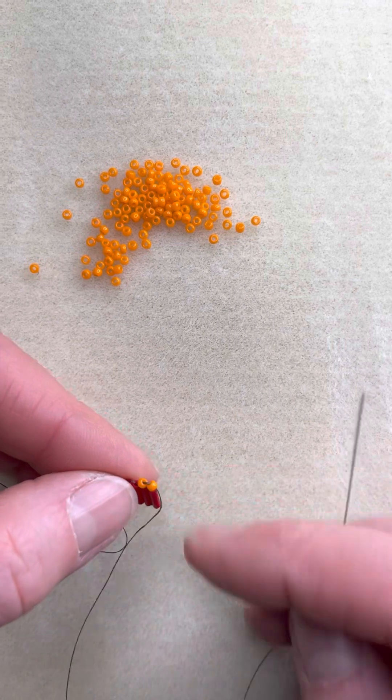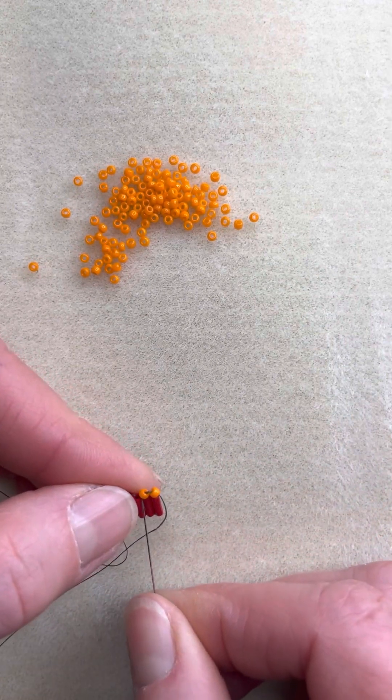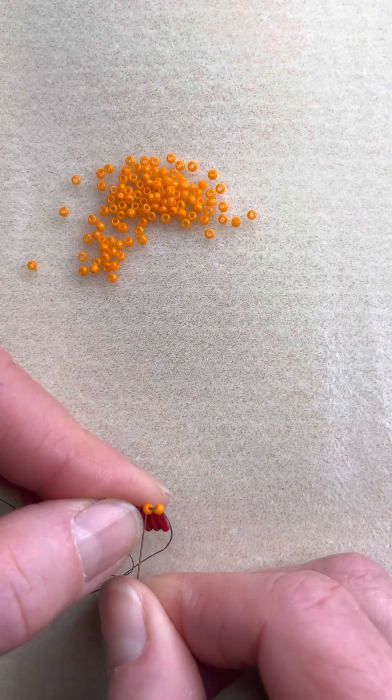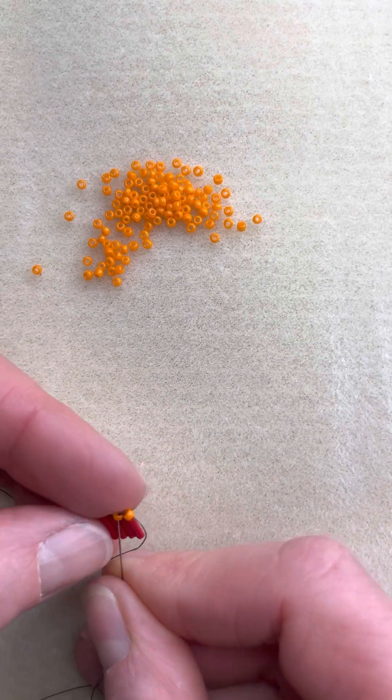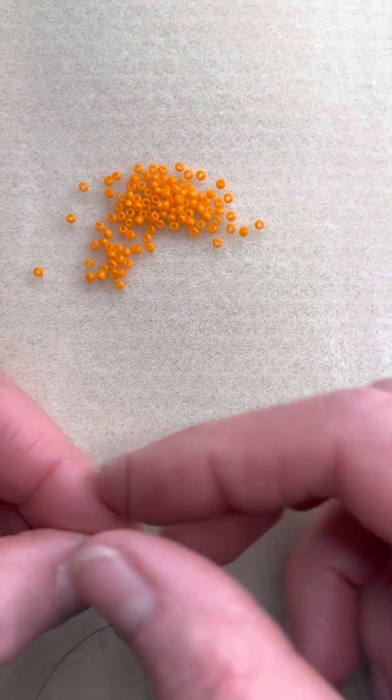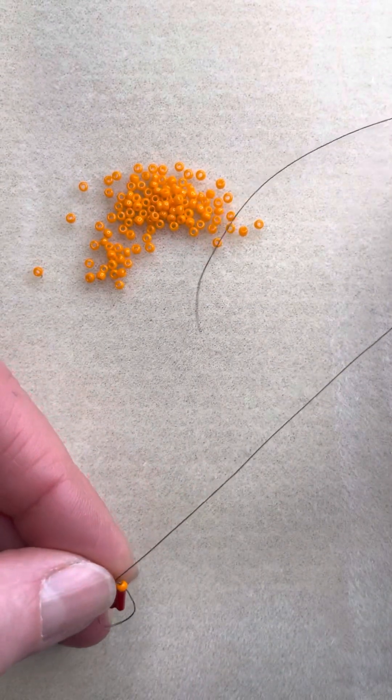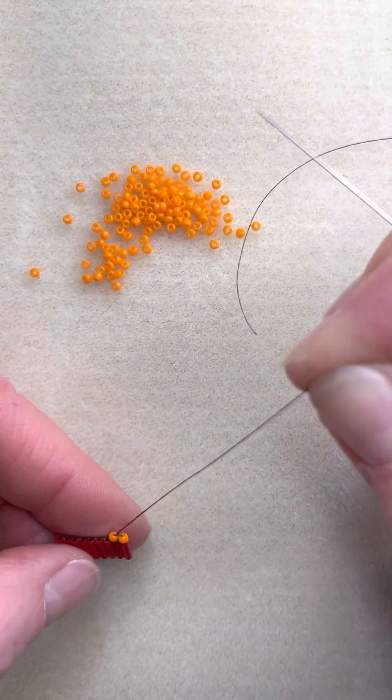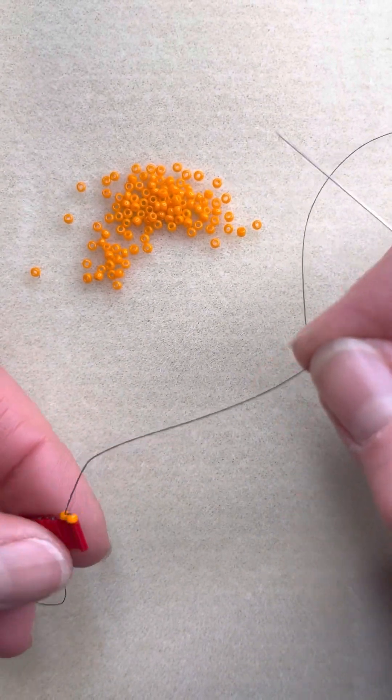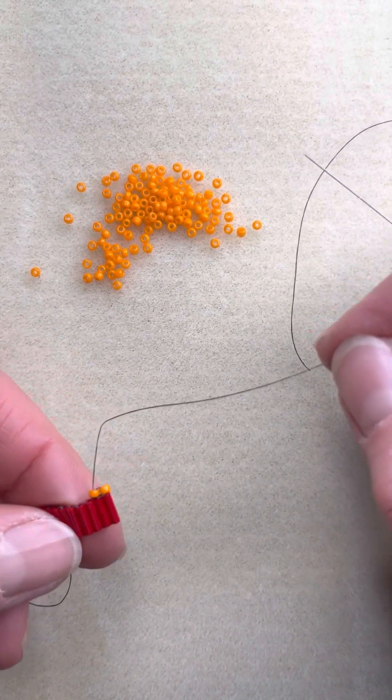You can see they still are kind of kissing each other and they're not flat on top. So we need to do one more thing here and we go back through that second bead. We don't have to go through a bridge this time, they're already secured onto our bugles. But we go back through that second bead going up and pull snug. They're now nice and flat on top of those bugles.